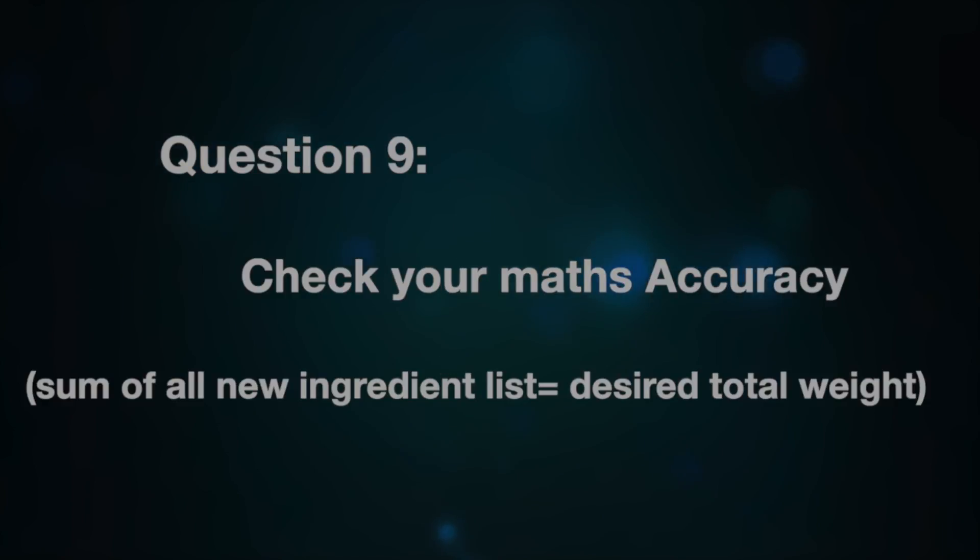Once you have the new ingredient amounts, cross-check by summing everything up and make sure it equals your desired total weight. So enough of the talk — we're going to go to the studying table and I'll apply all these key notes using one of my recipes. I'm going to apply it to my doughnuts recipe on my channel. I'll also paste all these notes in the description section for you. See you at the table!